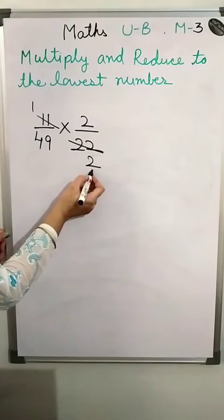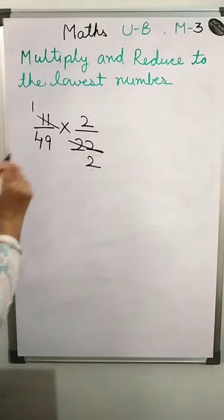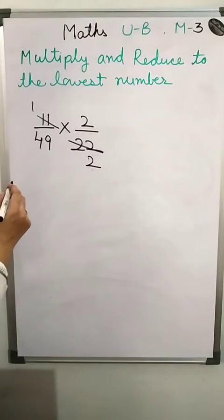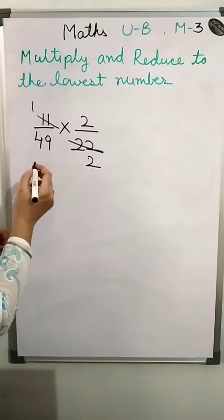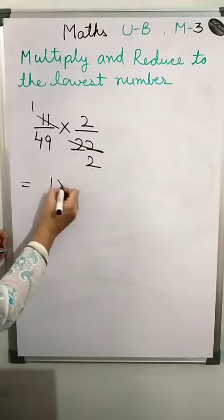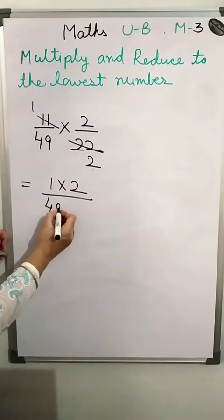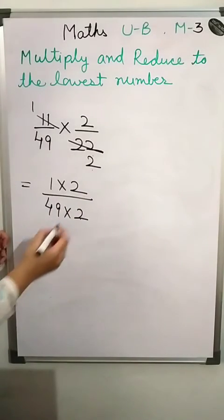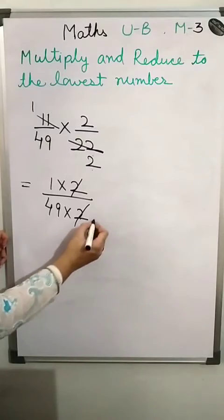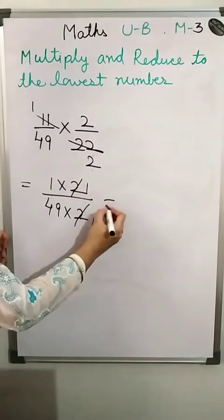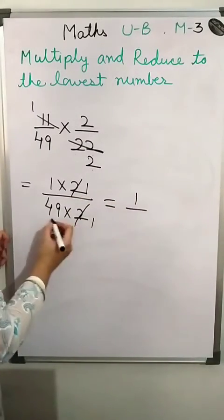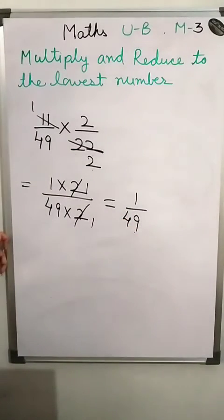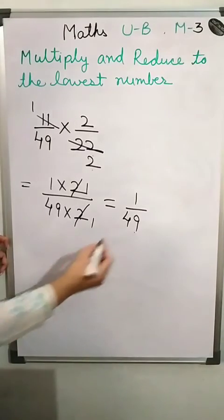11 twos are 22, so we get 1 and 2 left. Now 1 into 2 and 49 times 2 — look at 2 and 2, these are the same, so cut them. What is left? 1 into 1 is 1, and 49 into 1 is 49. The denominator is more than the numerator, so the answer is 1 upon 49, a proper fraction.